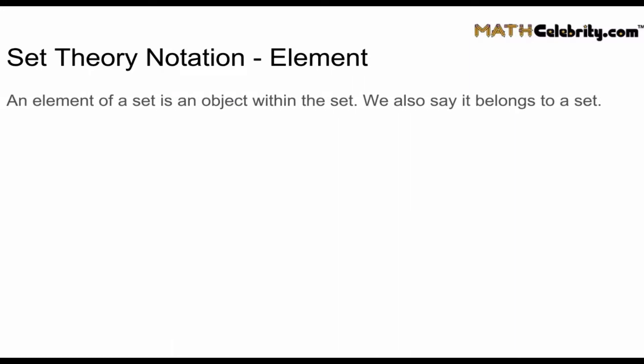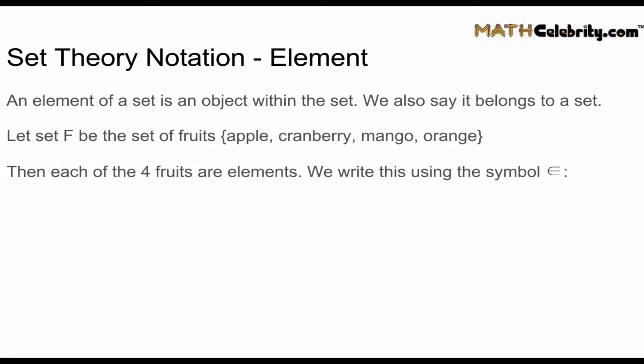So let's look at set theory notation elements. An element of a set is an object within the set. We can also say it belongs to a set. So let set F be the set of fruits. From our previous slide we had the four fruits: apple, cranberry, mango, and orange. Each of the four fruits are elements and we write this using the symbol. It looks like an E but that means element. And so here's how we write all the elements of the set.